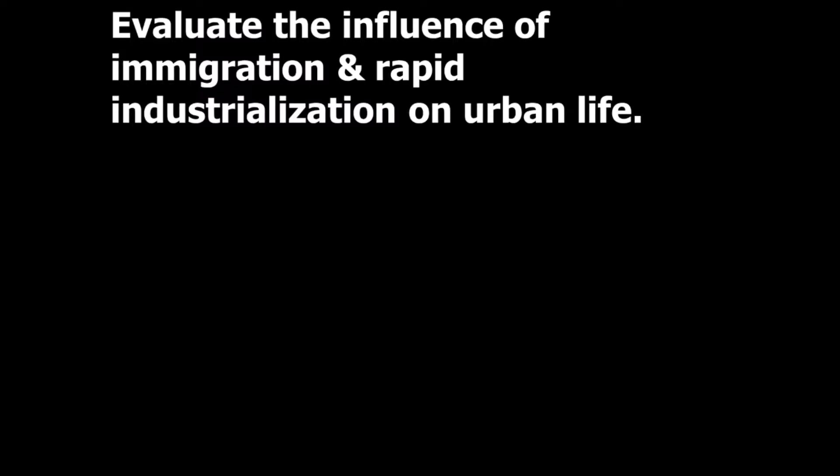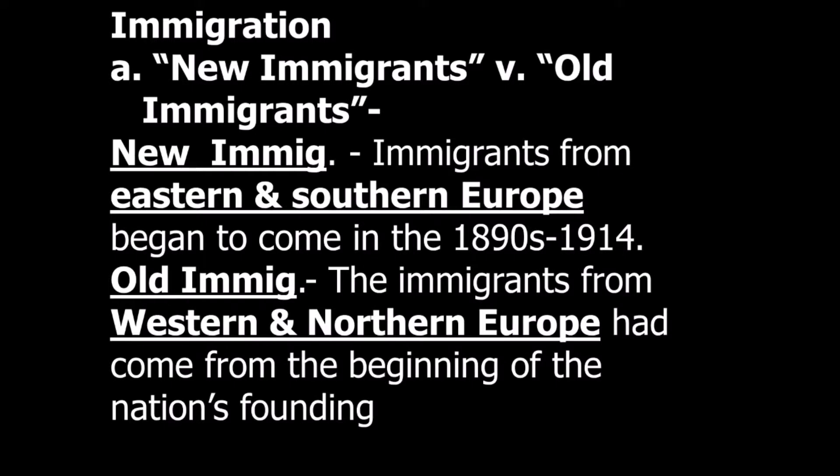Our goal for this entire unit is to evaluate the influence of immigration and rapid industrialization on urban life. We've got to know what immigration and industrialization are. Immigration is when people from other countries come into our country. If they're leaving, we call that emigration, spelled with an E — E means exit. Industrialization means the basic technological factory work, the development of cities as opposed to rural areas. We used to be a very farming culture; now we're becoming more of an urban culture based on production and factories instead of agriculture.